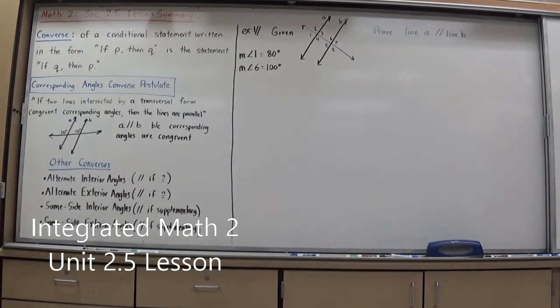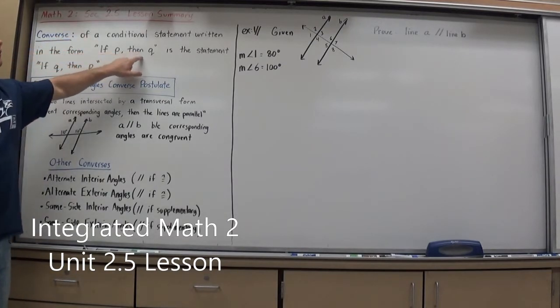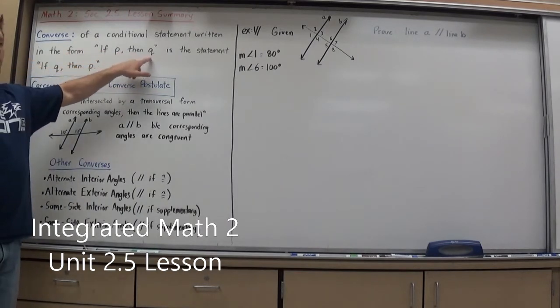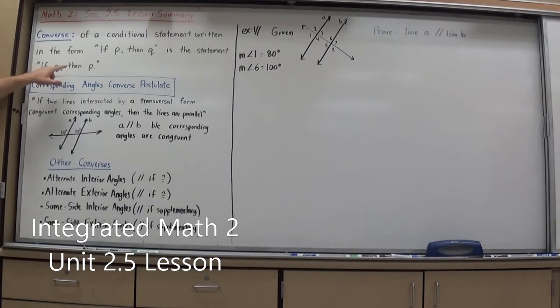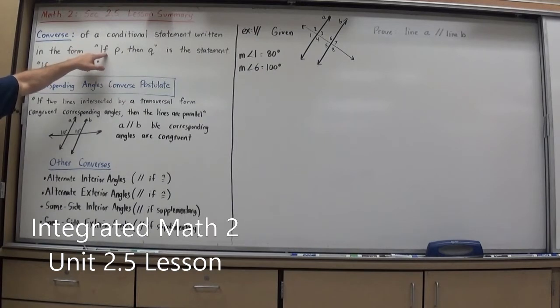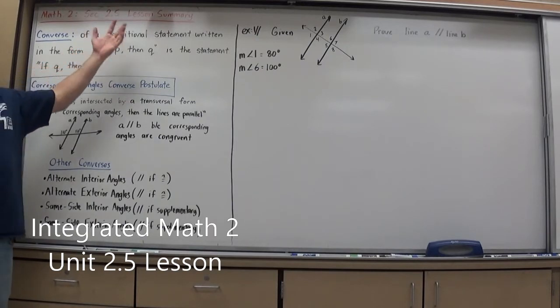In this lesson we're going to be introduced to converses. A converse is, and we'll deal with it mainly with conditional statements, the converse conditional statement is written in the form if P then Q. Or, if it's written in the form if P then Q, the converse is the statement if Q then P. It's pretty much reversing it. So if you think of it reversing, the conclusion becomes the hypothesis, and the hypothesis becomes the conclusion.